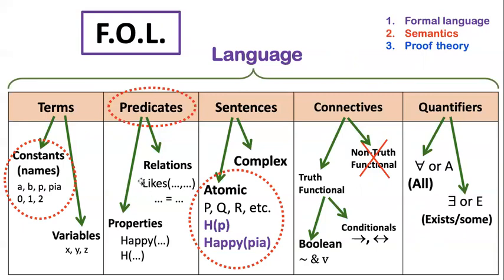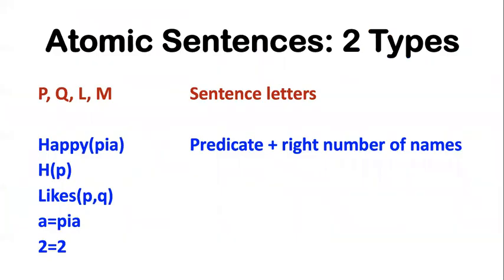The key thing about predicates that helps us distinguish them from names is they will always be written with uppercase letters. Notice that 'likes' is capitalized and 'happy' is capitalized. You can even just have the capital letter H. That's an acceptable way to write happy. So that would be the short form for happy. The only requirement is predicates always have to start with a capital letter and names can never have any capital letters. This allows us really easily to just tell at a glance what counts as a predicate or a name.